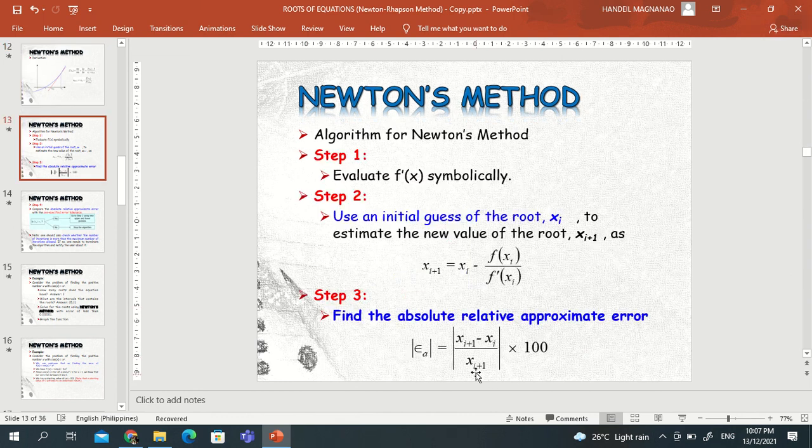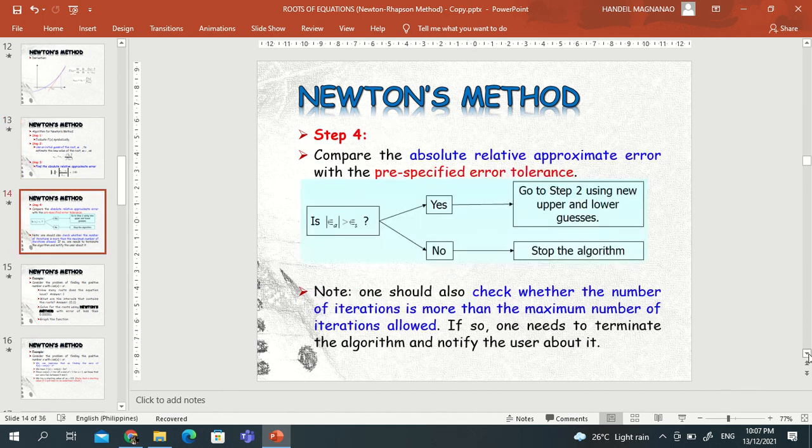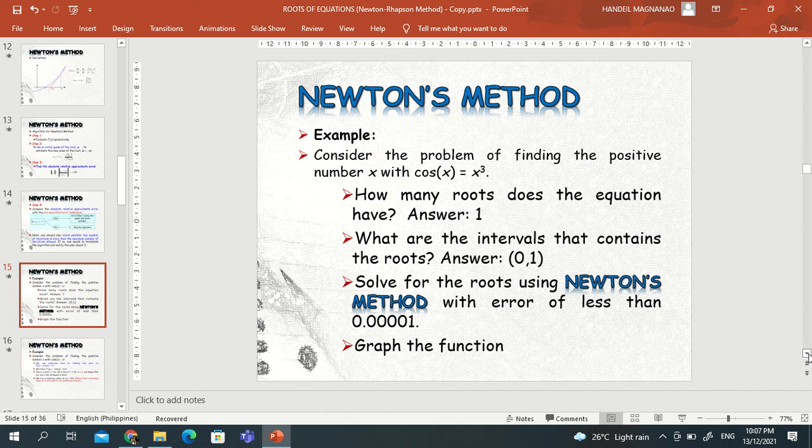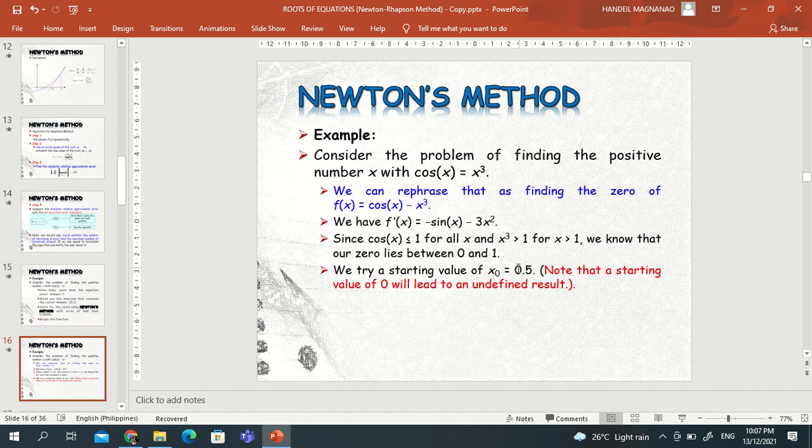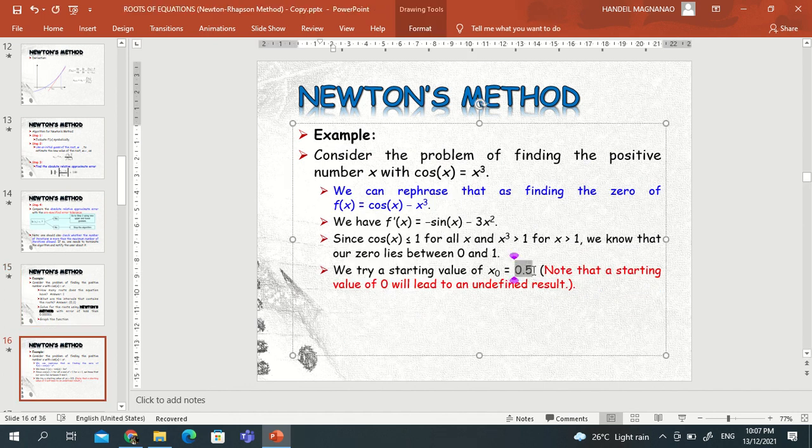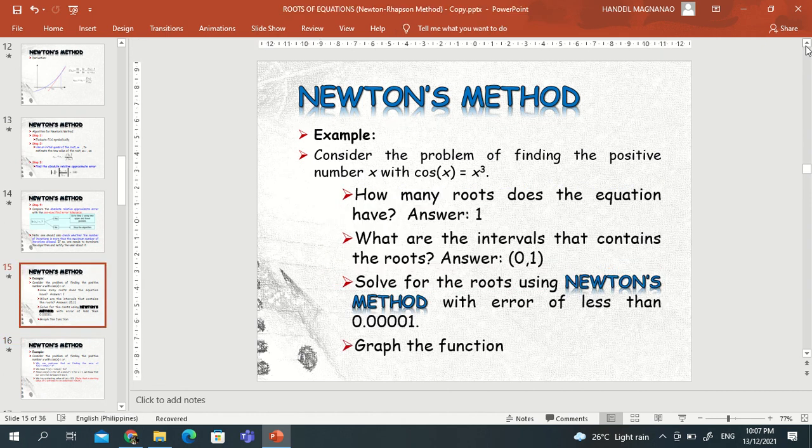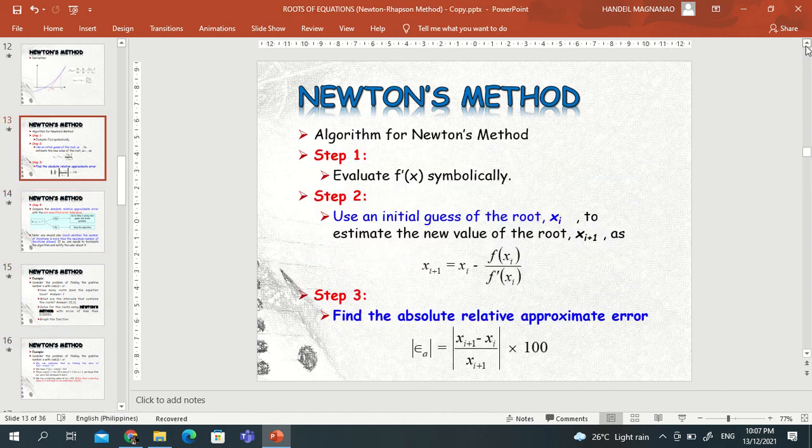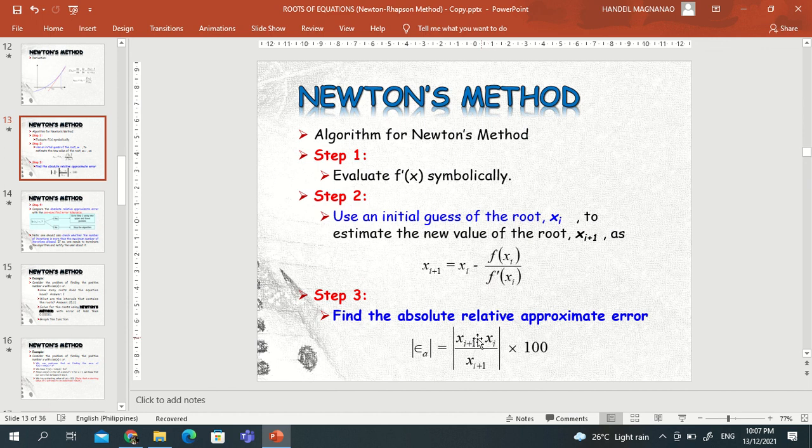Okay, this is x sub i plus one. So to calculate this, you make use of this one. So you substitute your initial value x sub i, which is equal to, I think we use, if I remember it right, we use 0.5. So that is our initial value. So that is our x sub i, so you substitute it in this formula. So this is 0.5 minus x sub i, x sub i plus one.